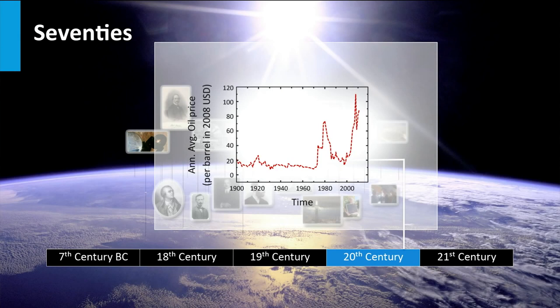In the 70s, due to the oil crisis and the increasing oil prices, the public interest in photovoltaic technology for terrestrial applications increased. PV technology was no longer only a niche technology for space applications. In the late 70s and 80s many companies started to develop PV modules and systems for terrestrial applications.